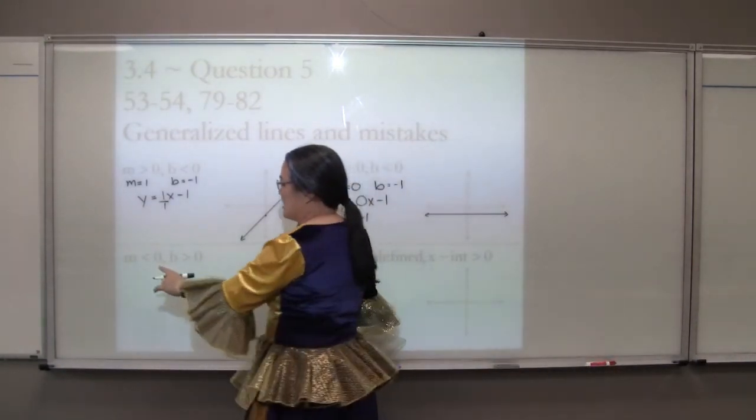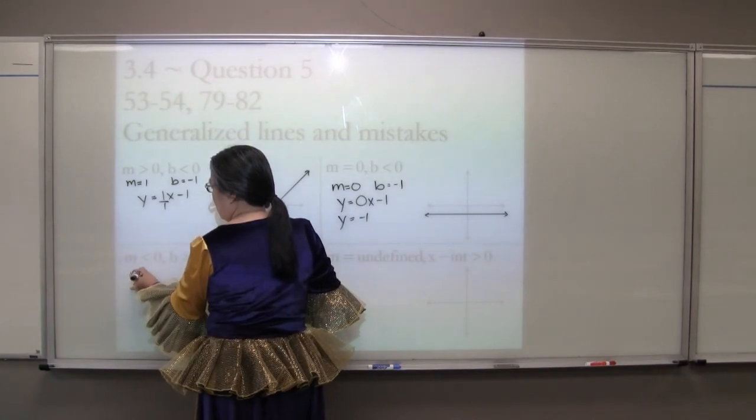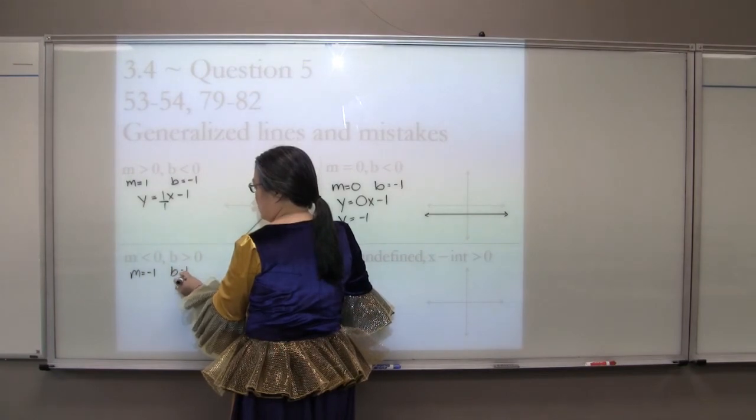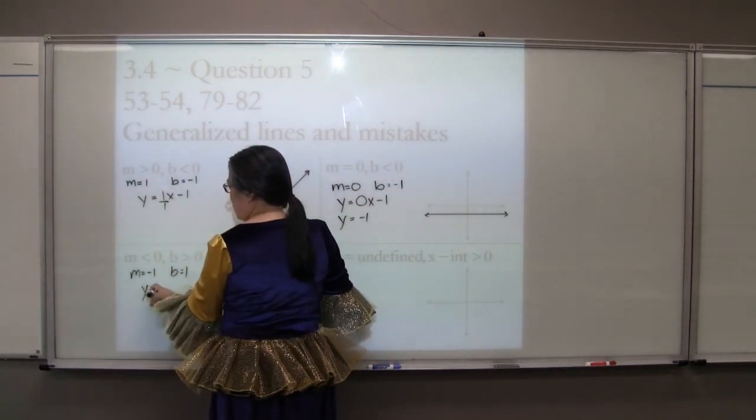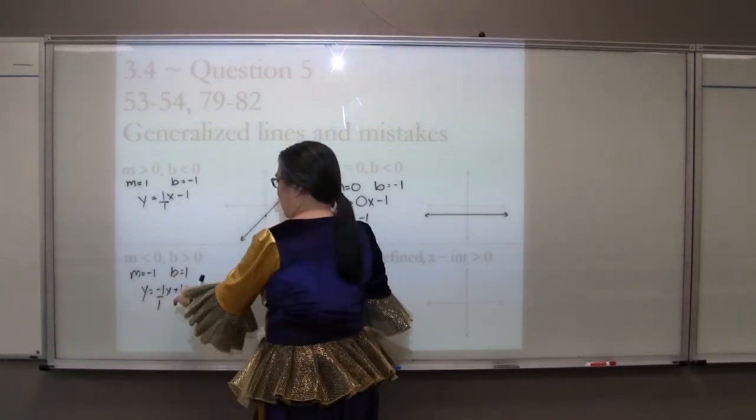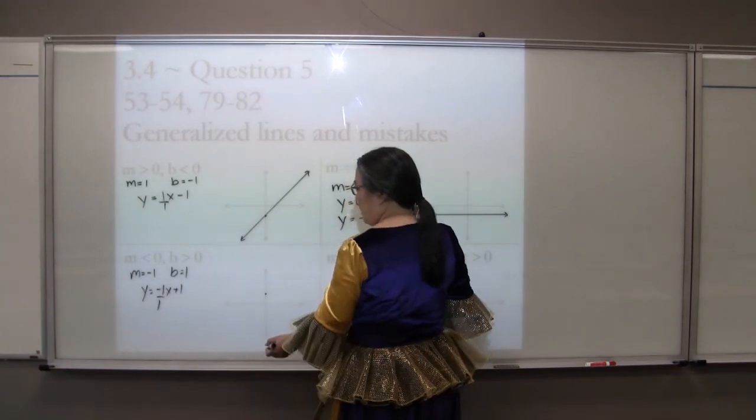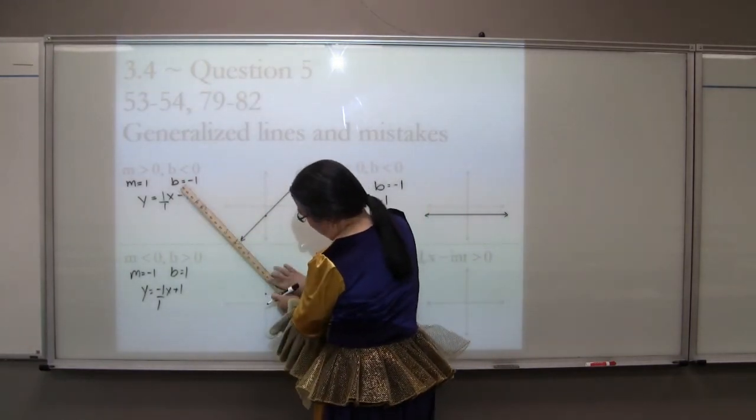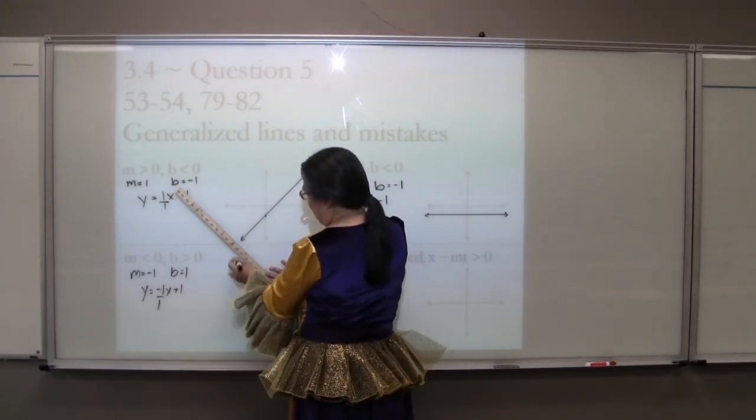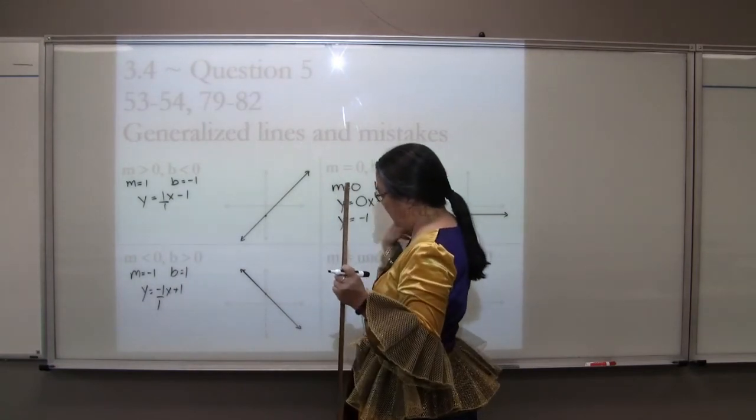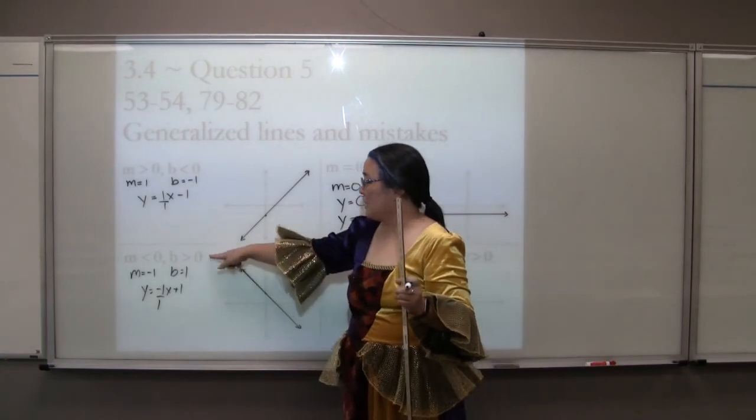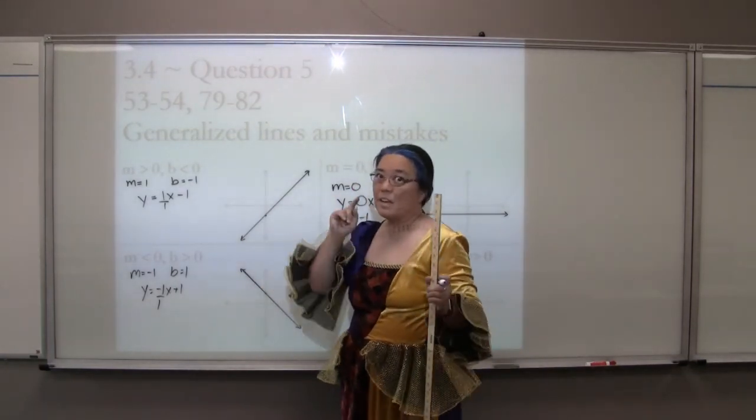Next, a slope less than zero, such as negative one. A y-intercept greater than zero, such as positive one. y equals mx plus b. I want a rise over run, so it's going to hit somewhere above here and have a negative slope. Approximately down one, right one. Long line, slightly past the edges, arrows at both ends. As long as it has a slope less than zero going downhill, and a y-intercept greater than zero above the x-axis, it's fine.